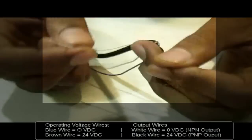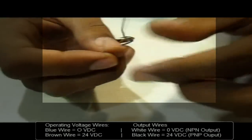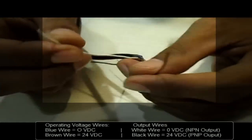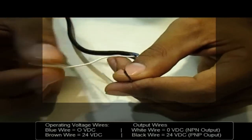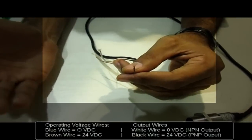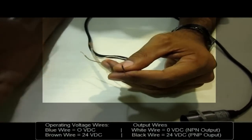From this black wire we will be getting 24 volts when an object is detected and from this white wire we will be getting 0 volt. These two wires are given so that accordingly we can select our controller, our source sensing principle, and PLC that we will be studying later.